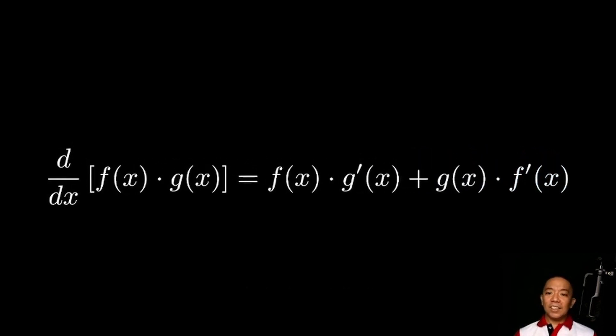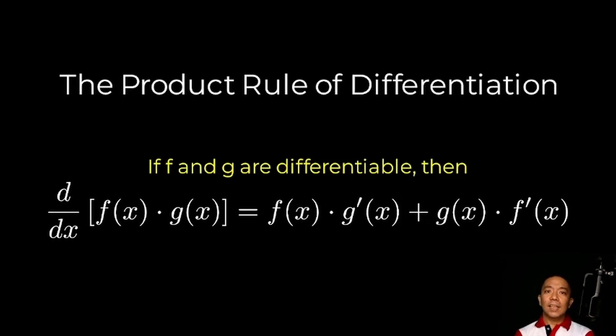Notice that we're done. Na-reduce natin yung limit ng difference quotient nung f times g of x dun sa gusto nating result, which is f times g prime of x plus g times f prime of x. Salamat sa pakiganin.